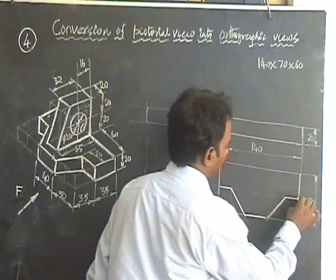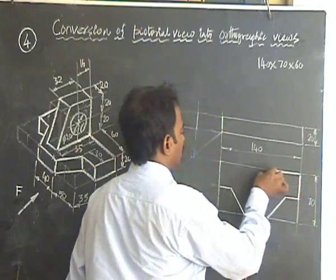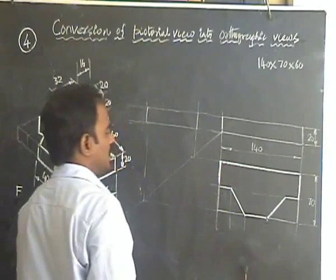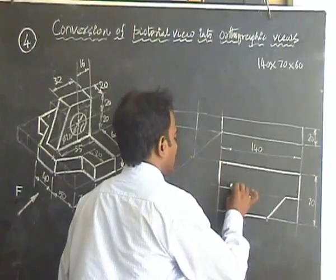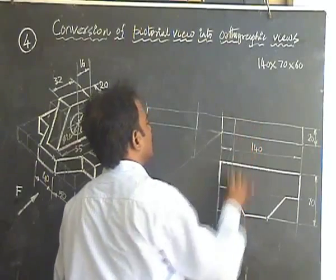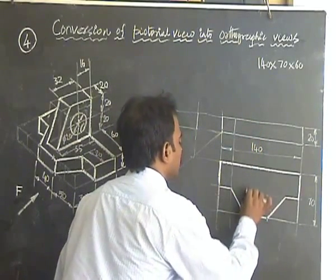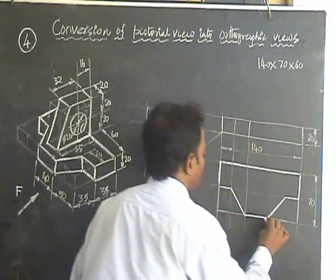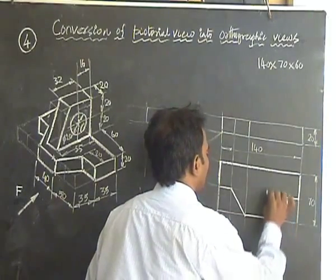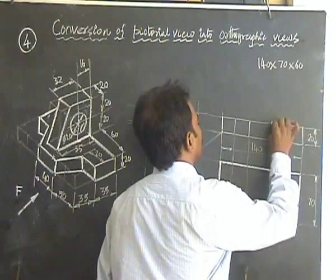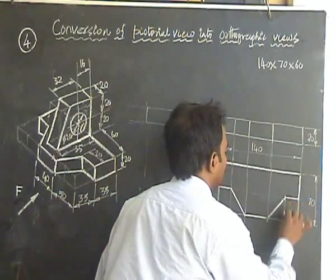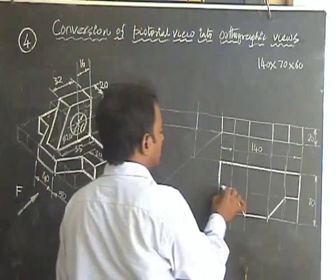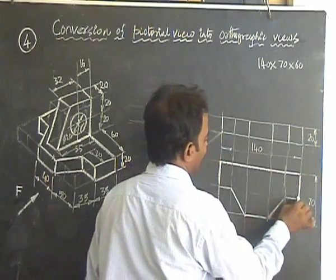So this is the top view for the bottom block. So it will be like this. Then you get the corresponding front view. Project these lines to get the details on the front view. Here also you can draw lines. Say you have the 20 rectangle, 30 rectangle, then the next rectangle is 40 rectangle. Once again you get the 30 rectangle. Remember, you have to draw the top view first. Because here only you get the detail.